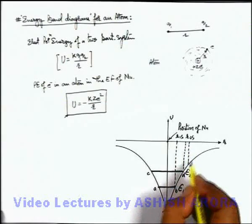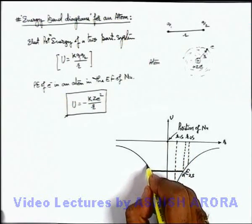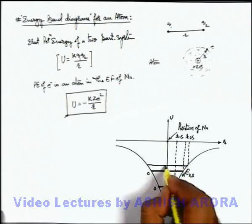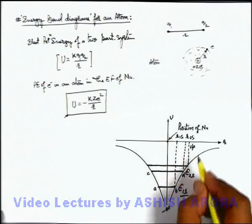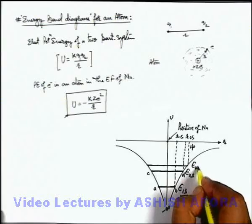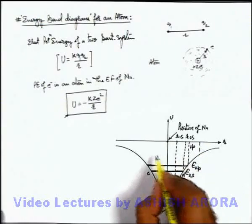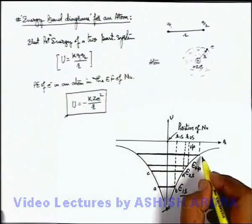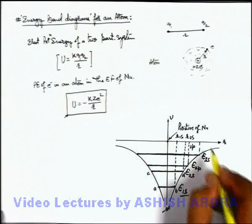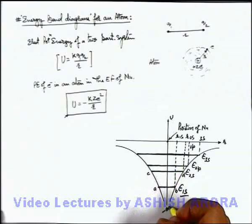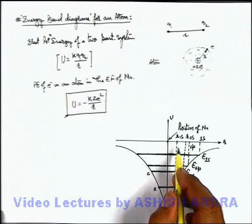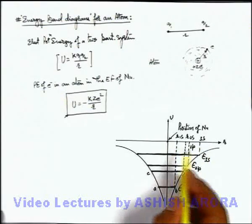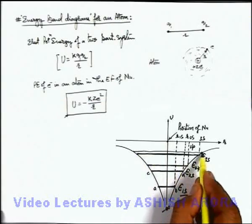And similarly, the next orbital for the electron is 2p orbital, and for this 2p orbital energy will be E 2p. Similarly then it'll be for 3s orbital, energy will be E 3s. This corresponds to 3s. And as we know that as electron moves away from nucleus, energy levels get closer and closer.